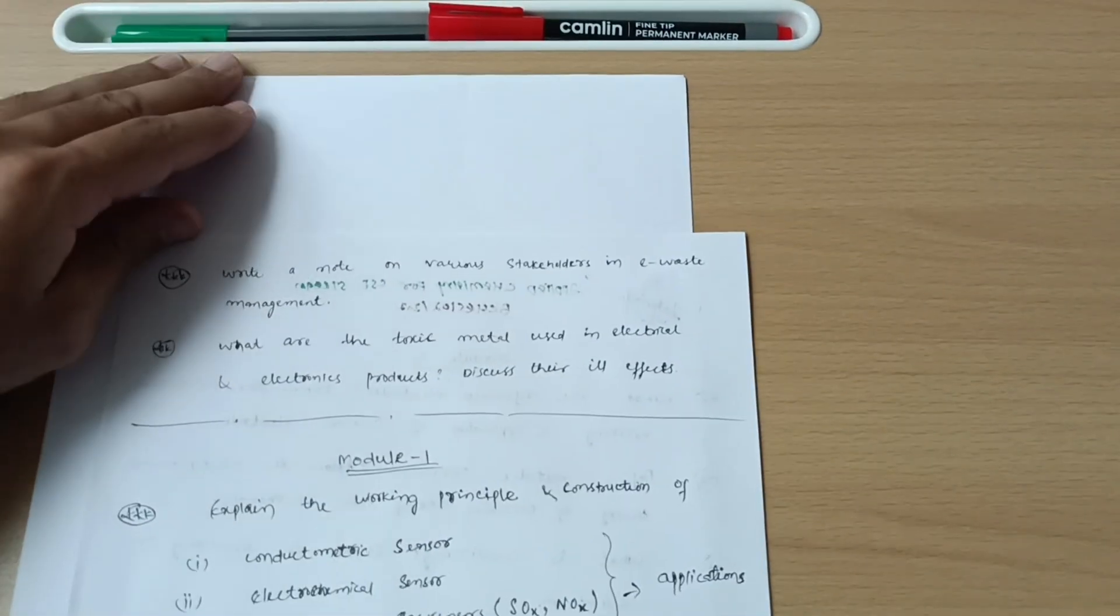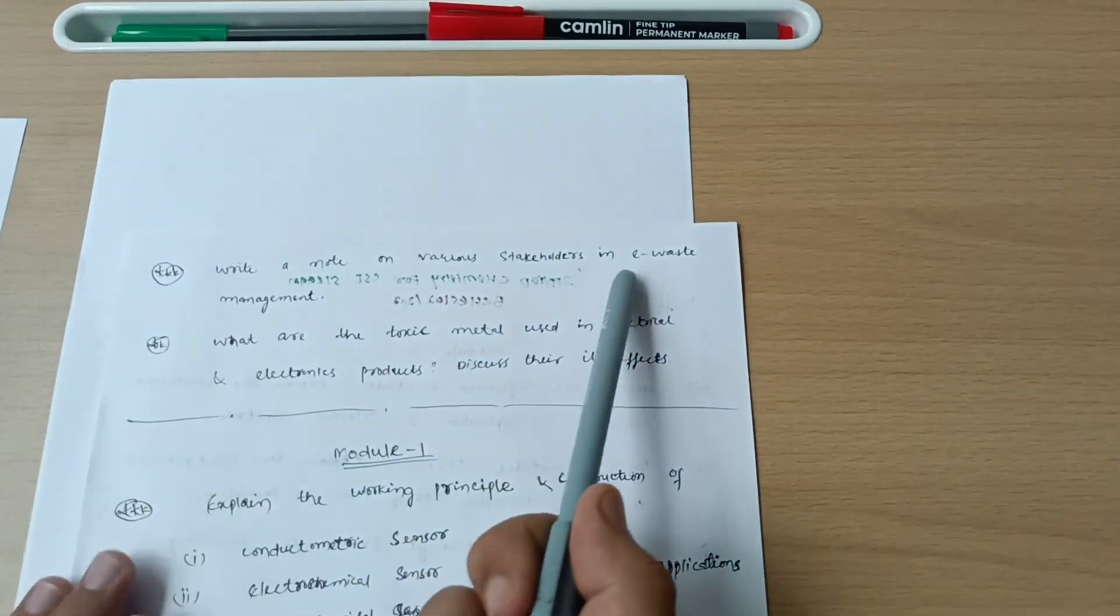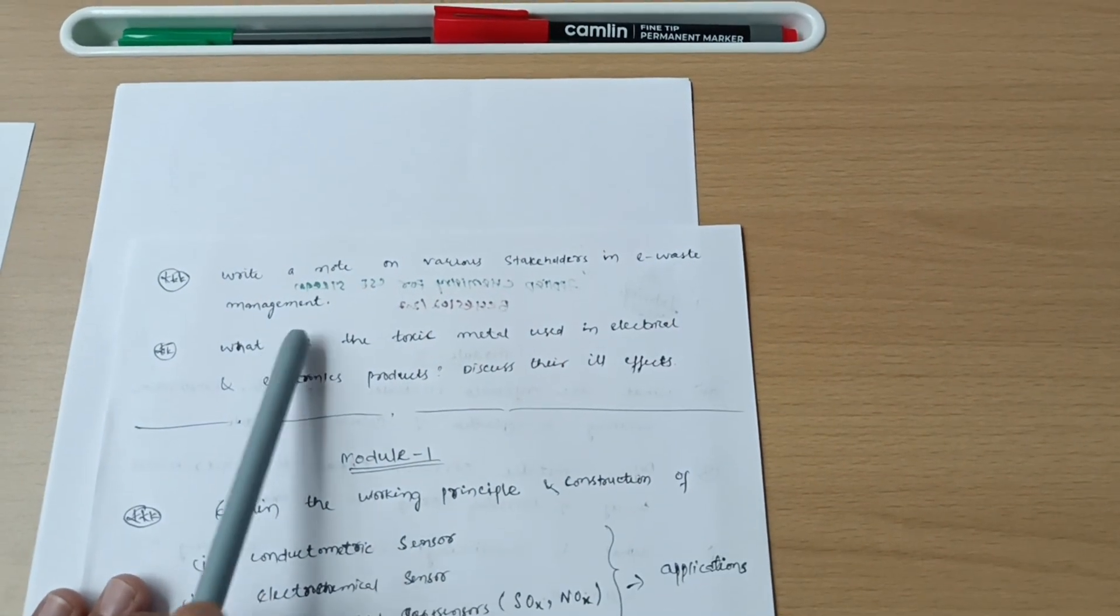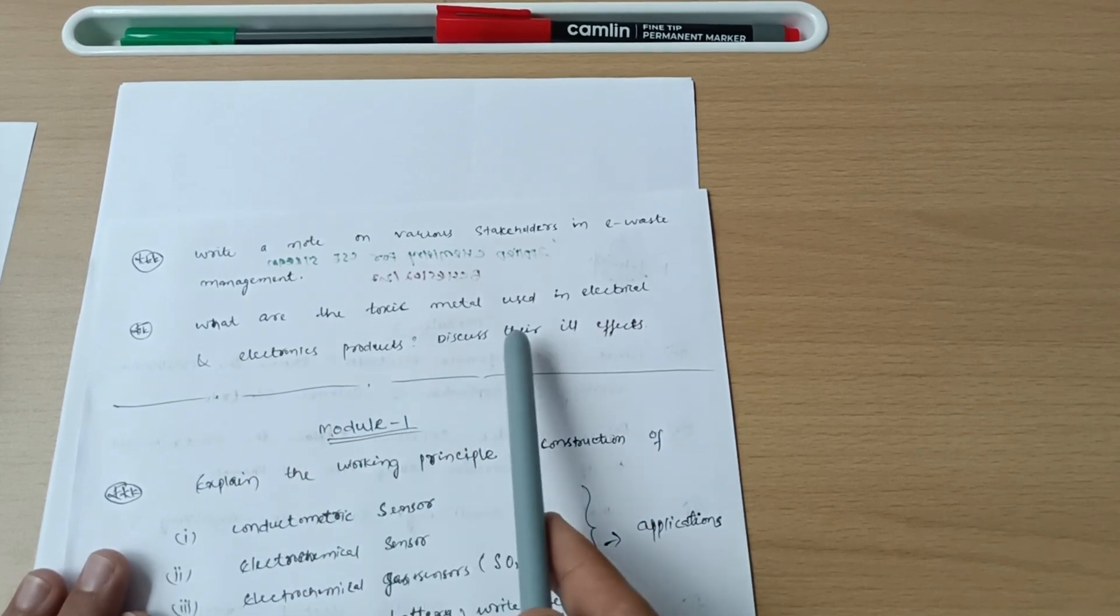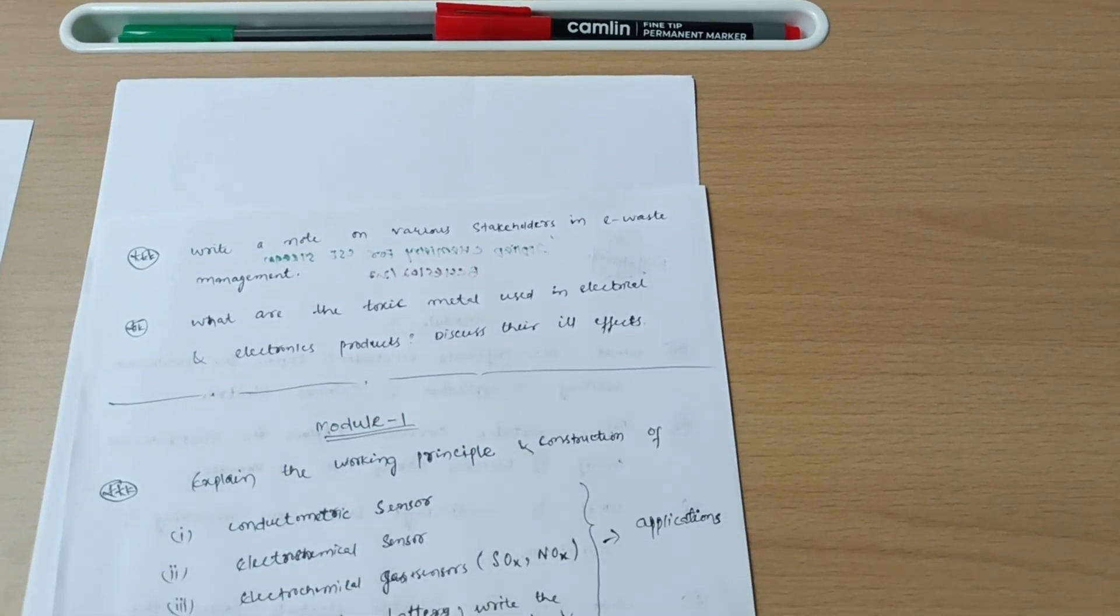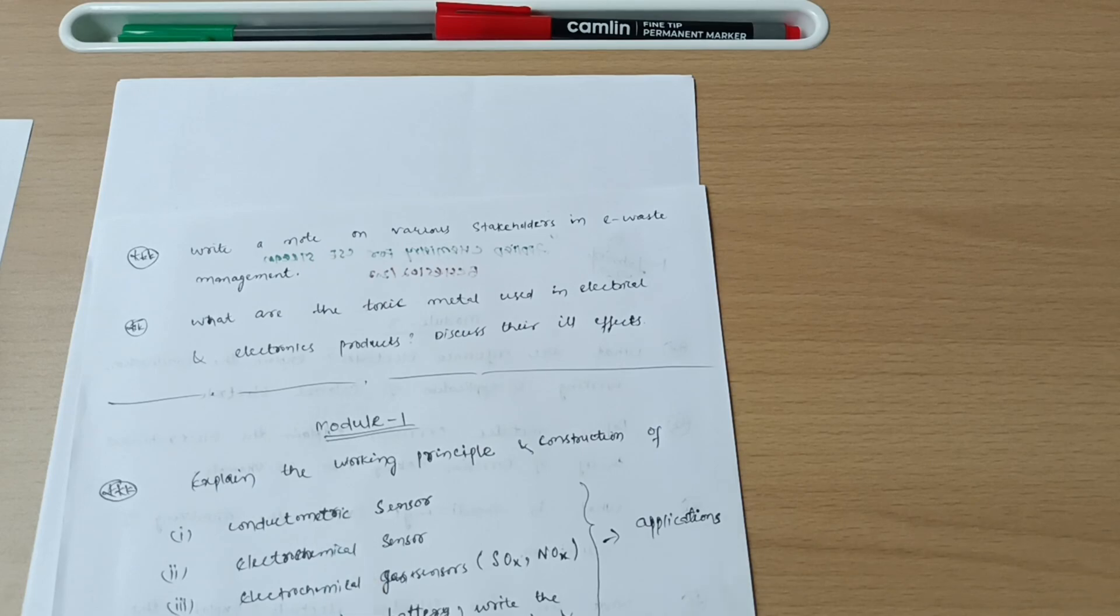Next super important question, explain the extraction of gold from e-waste in detail. These are the three important questions. Next, write a note on various stakeholders in e-waste management. What are the toxic metals used in electrical and electronics products? Discuss their ill effects. These five questions are enough to cover module fifth.